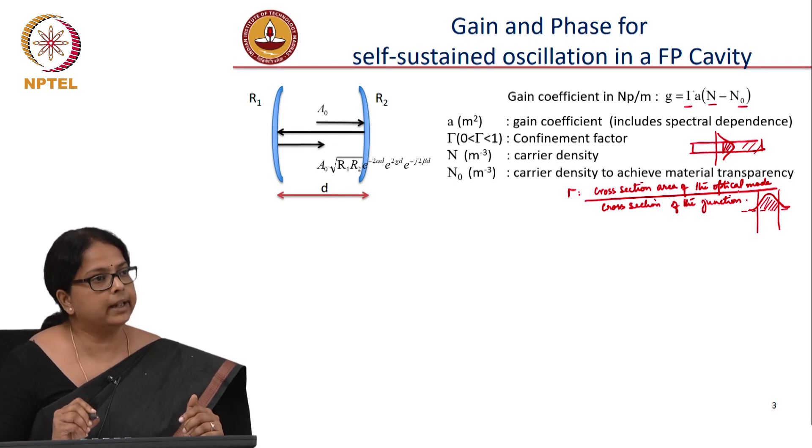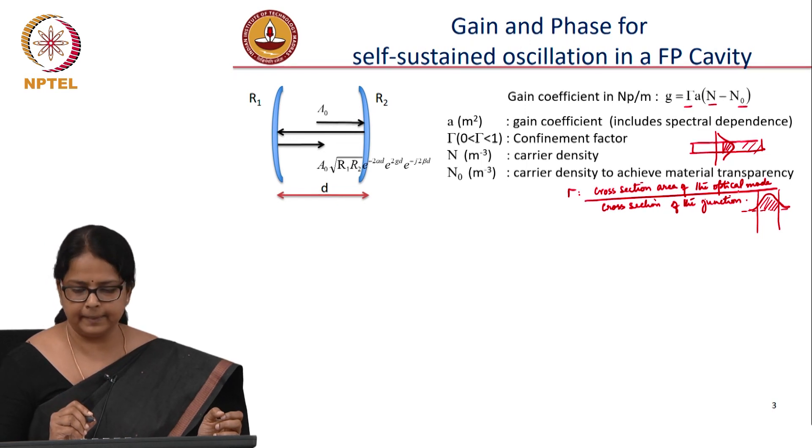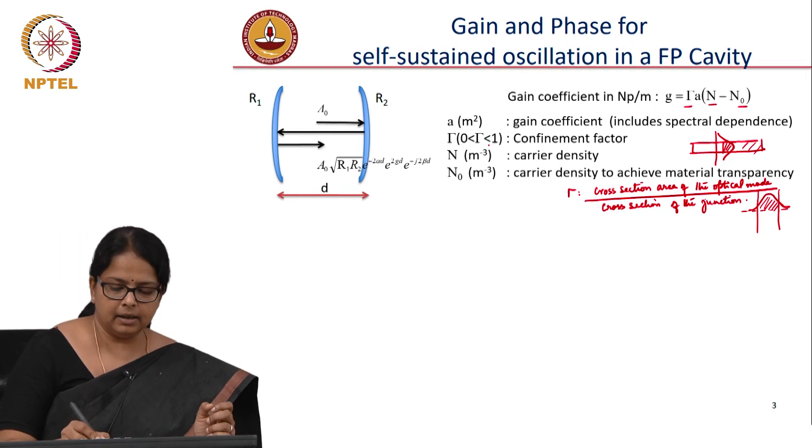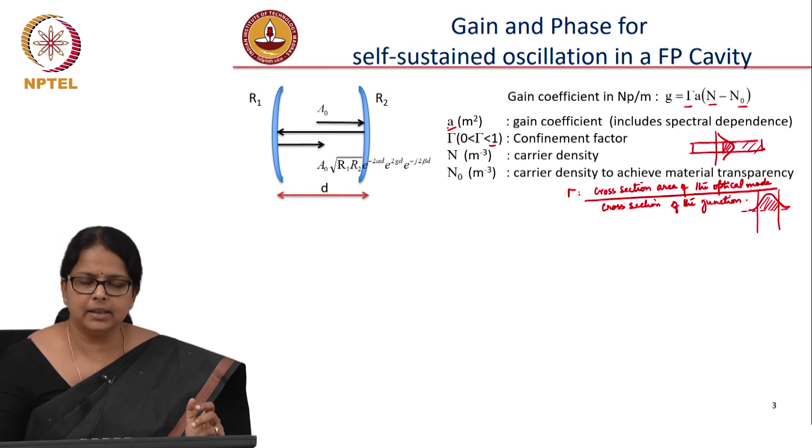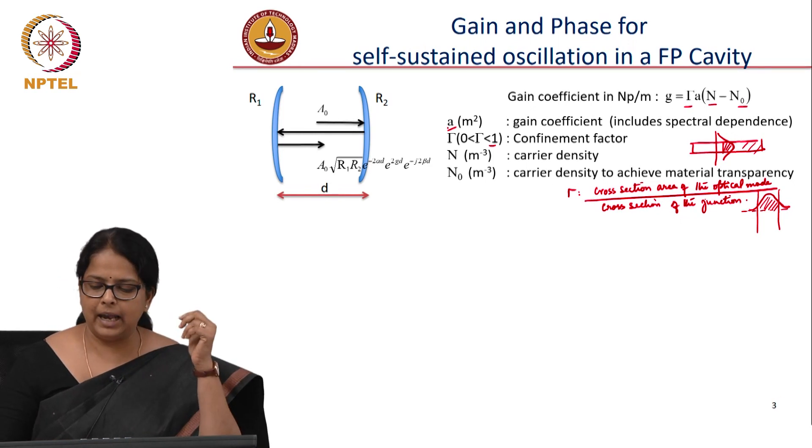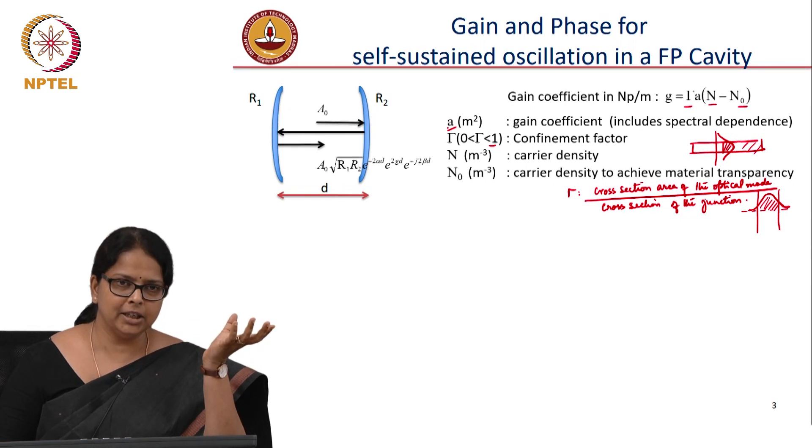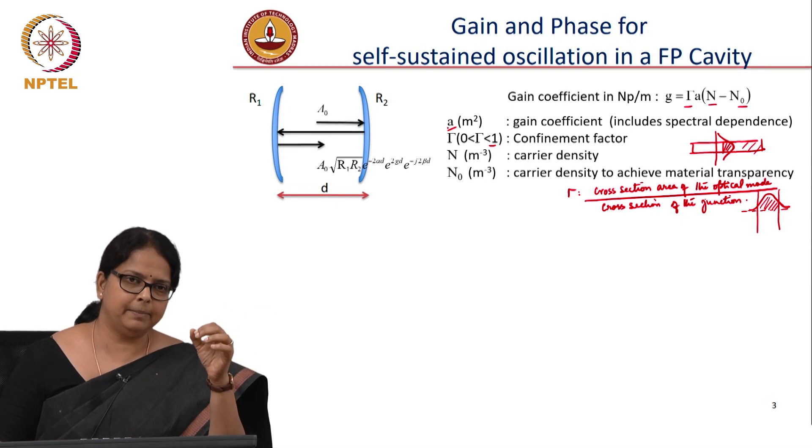At the moment, you do not know how to calculate the cross section area of the mode. We will reserve that when we are trying to do the optical fiber transverse mode discussion. But you understand that this is a number which is less than 1. So the question is, is A called emission cross section? So A is not, A is dependent on emission cross section, but A is not the emission cross section.